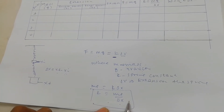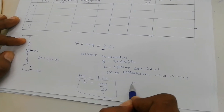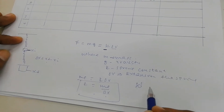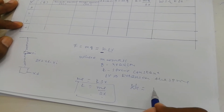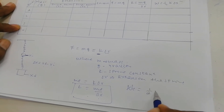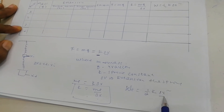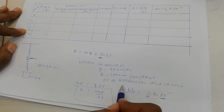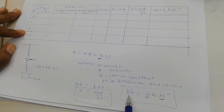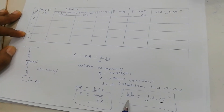In another expression, we can also calculate the work done on the spring. This is given by one-half k times delta-x squared, where delta-x squared is the amount of stretch squared. So we can calculate both k, the spring constant, and the work done on the spring in this experiment. Let us go to the experiment.